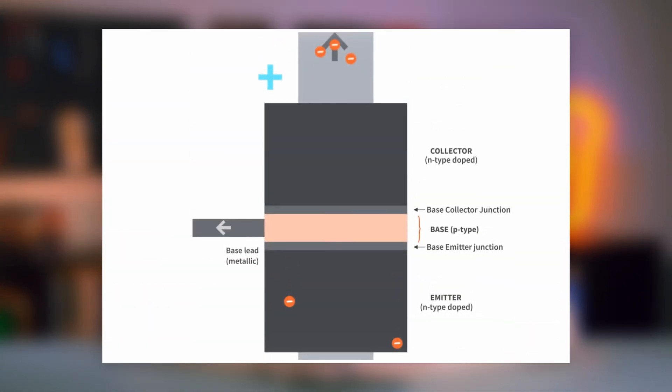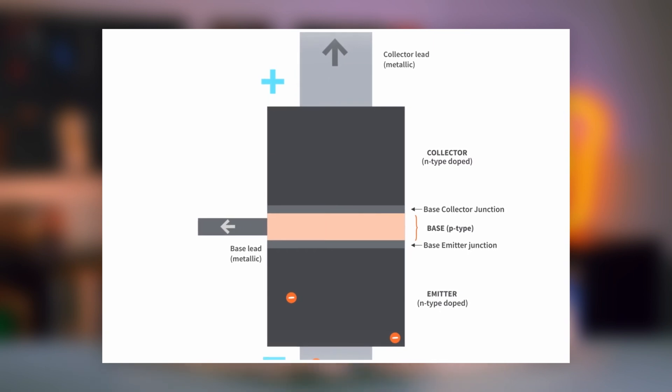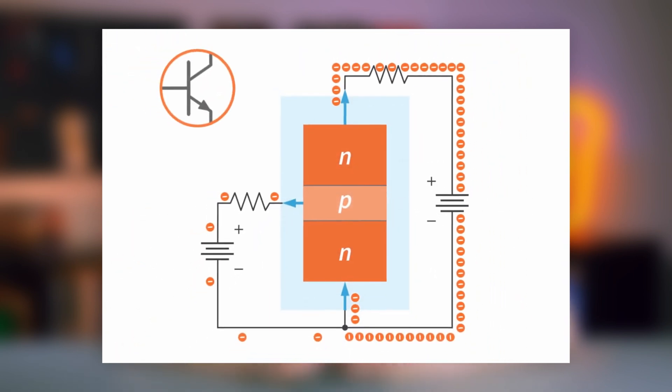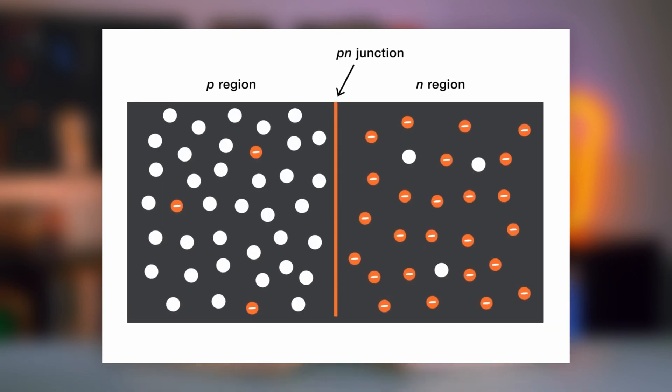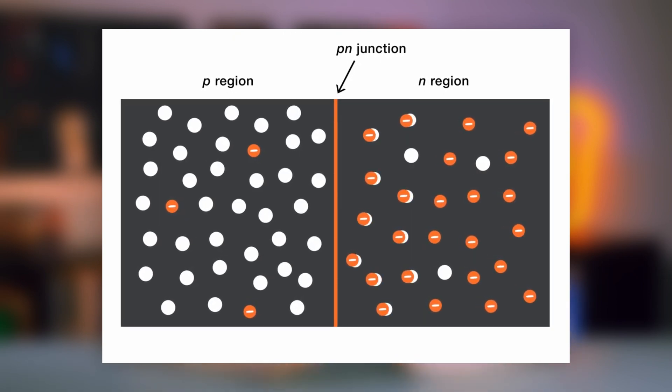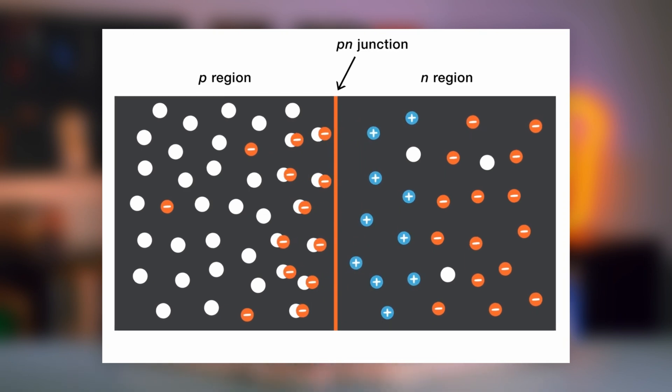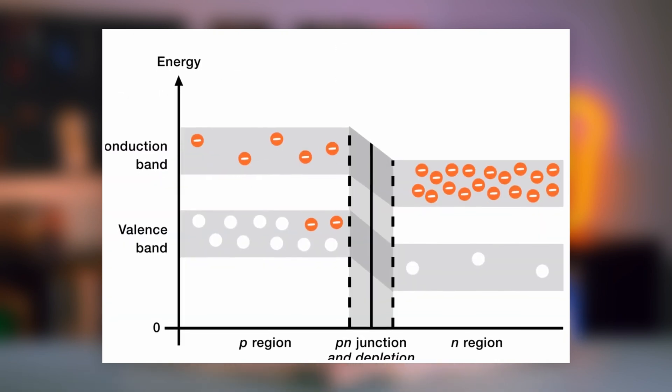In other words, they provide that push to move charges through a circuit. Beyond these, there's a world of nonlinear active components like transistors and diodes that play a crucial role in circuits. These elements have a unique ability to control or modulate the flow of electricity, enabling advanced functionalities within circuits — contributing significantly to signal amplification, regulation, or even signal processing in complex electronic systems.